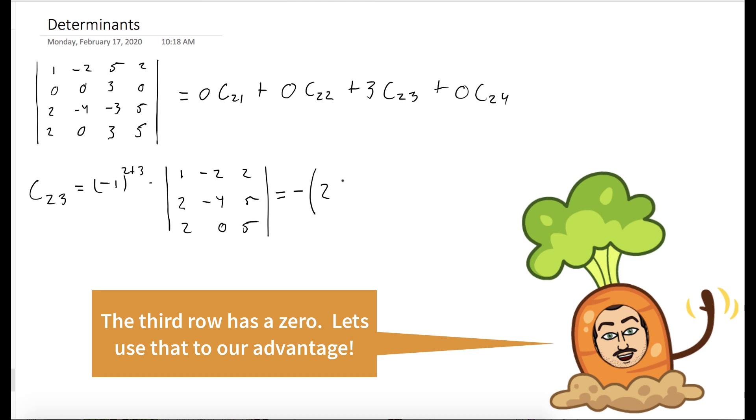And now we'll go again, figure out which row or column has the most zeros. In this case, we'll use the third row.